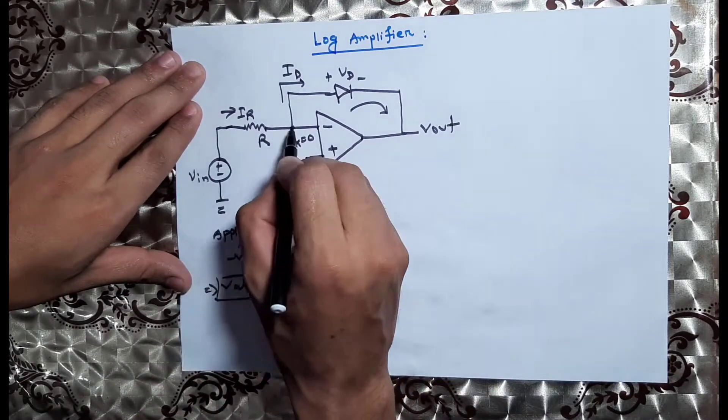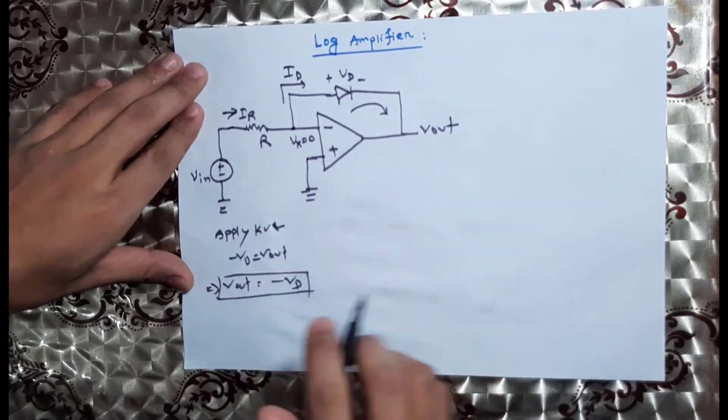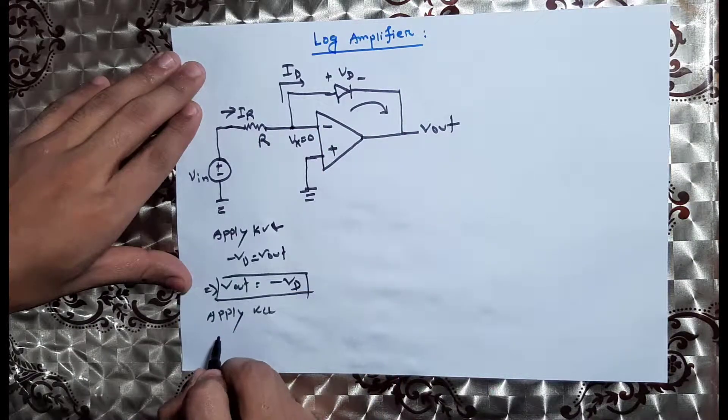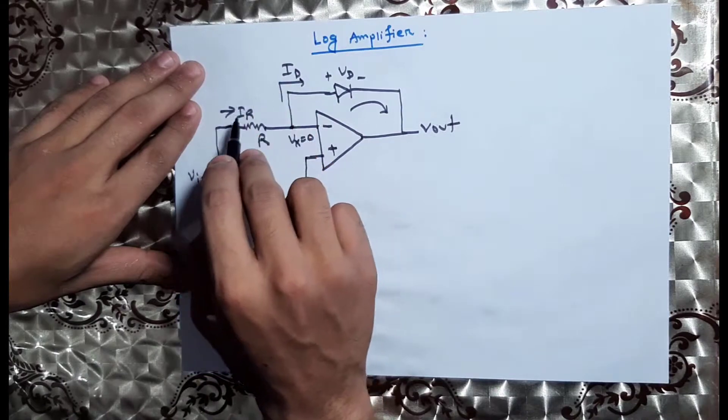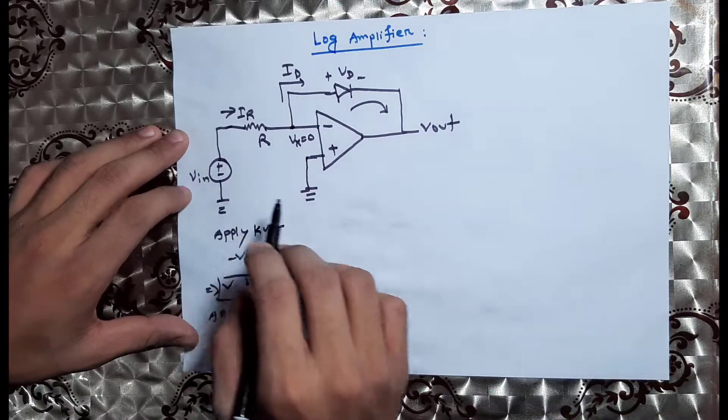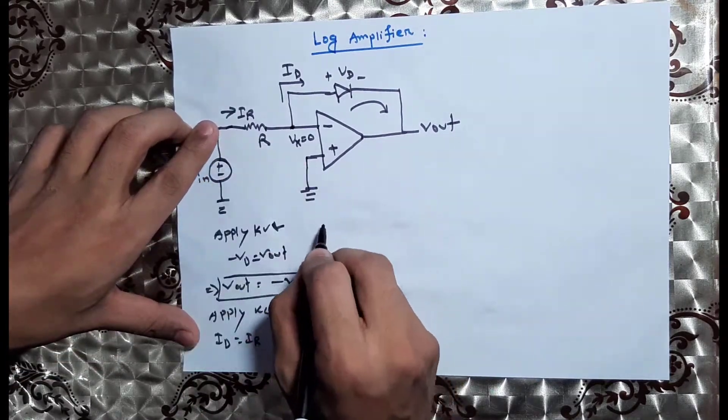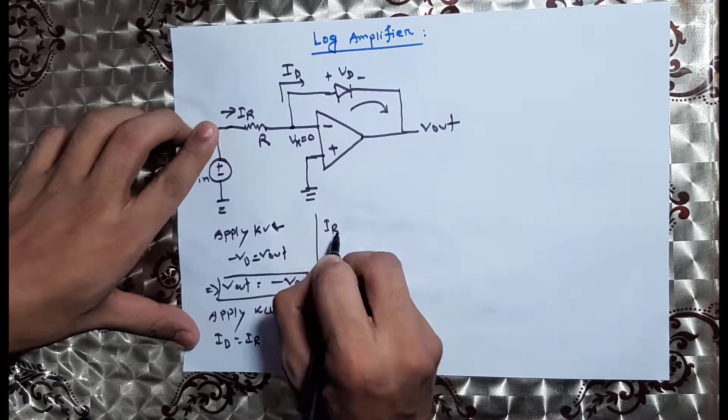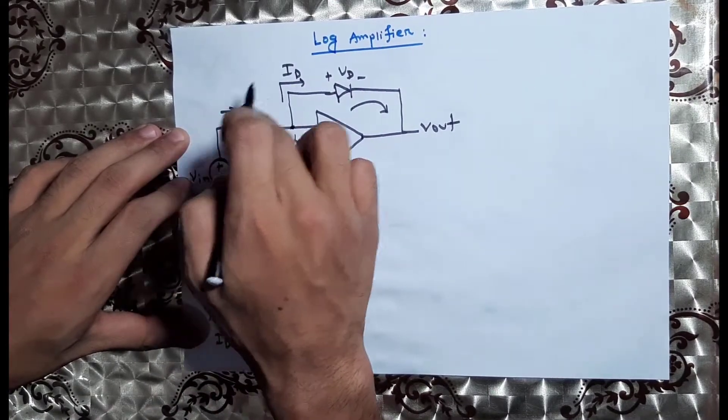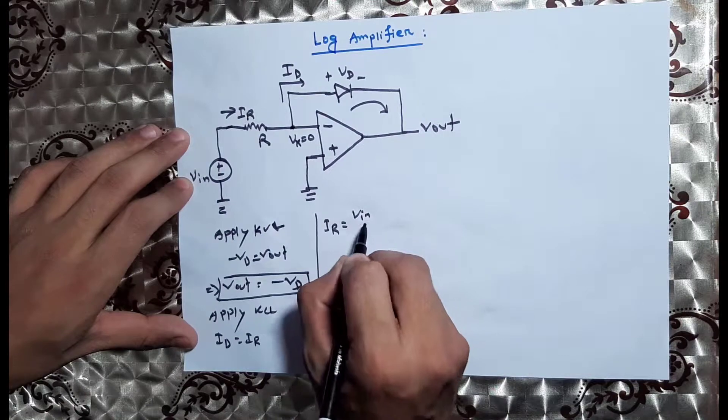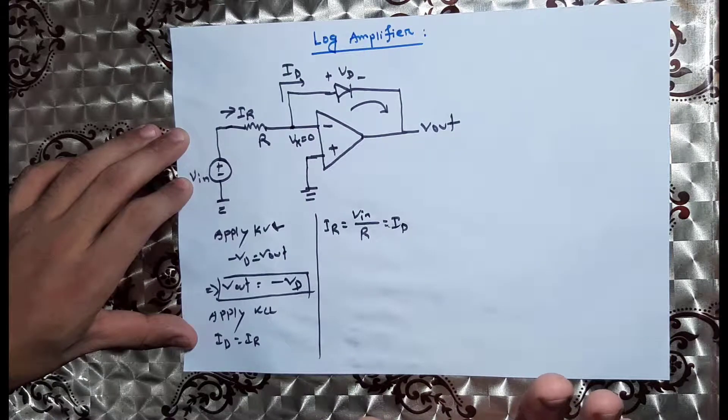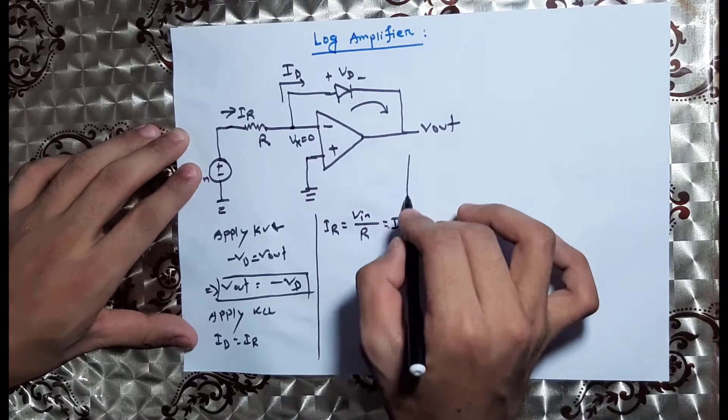Now applying KVL, ID is equal to IR. The current IR is equal to the input divided by total resistance R. So the main current is Vin divided by R, and this equals ID.